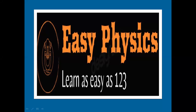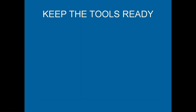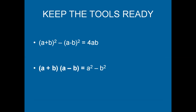As I always say, maths is the tool to operate physics. So to do this derivation, we need to be equipped with some mathematical tools which you have already studied in smaller classes. Let us recall the two formulas we are going to use: one is (a+b)² − (a−b)² = 4ab, and the second is (a+b)(a−b) = a² − b².